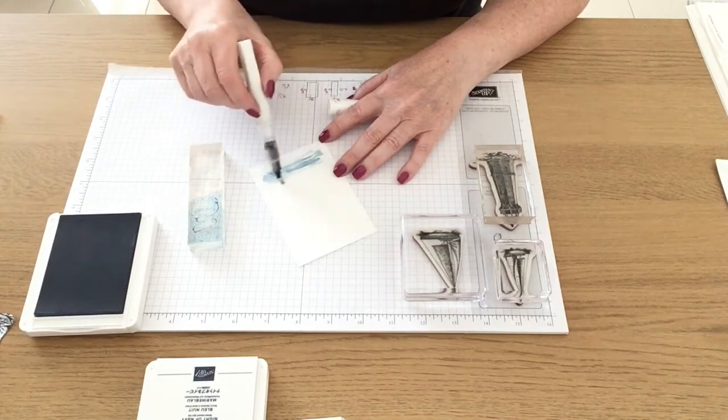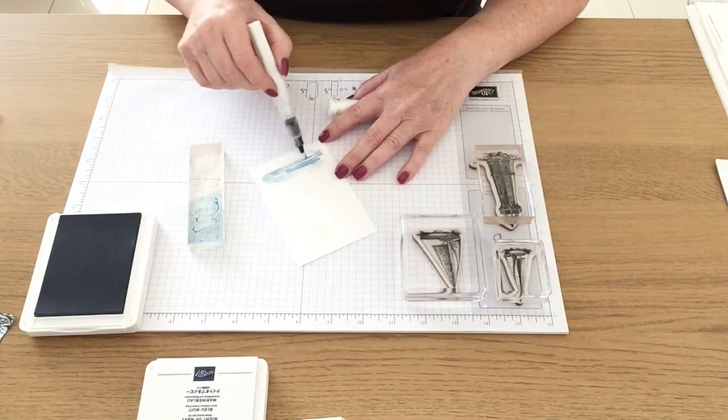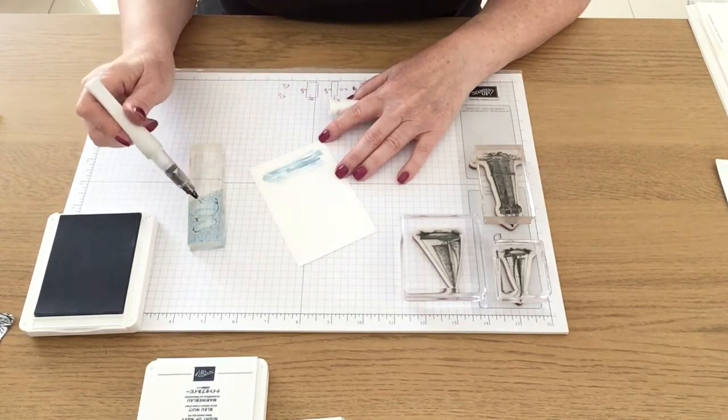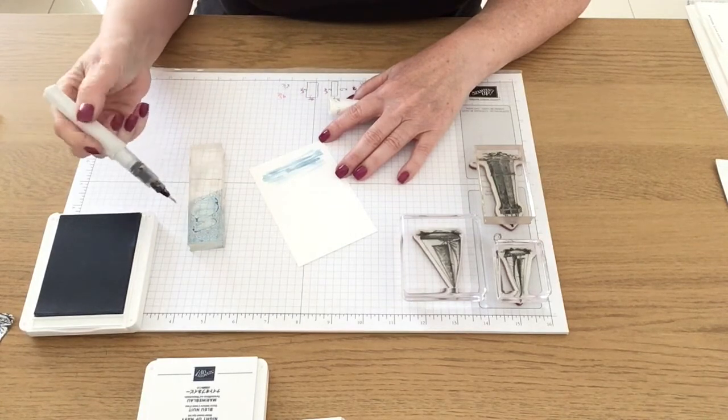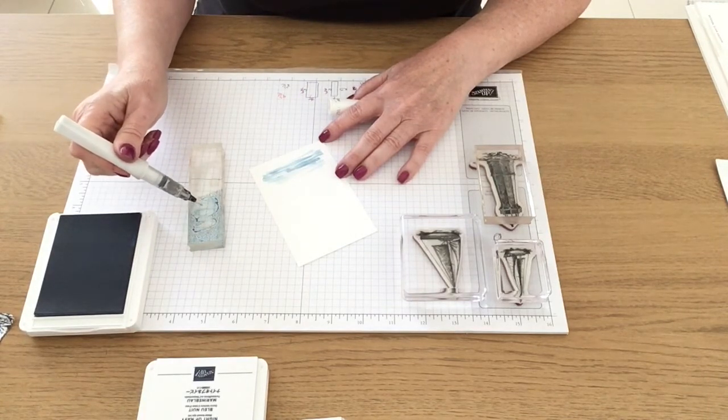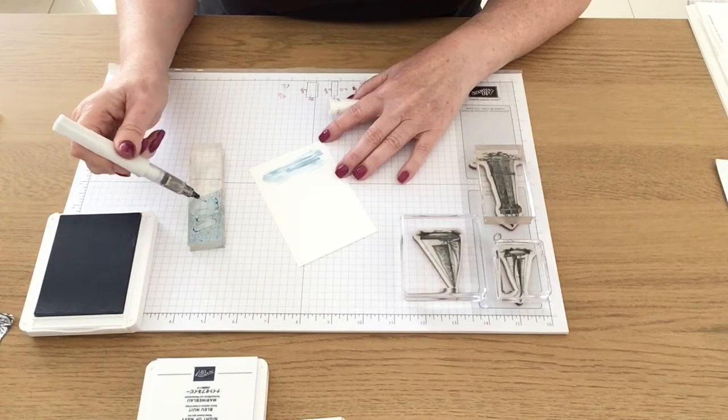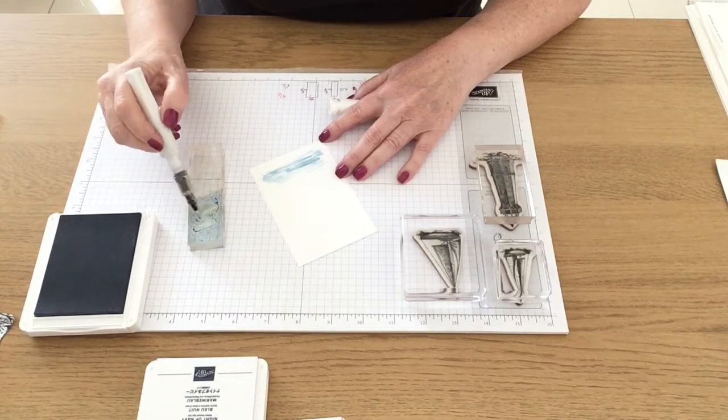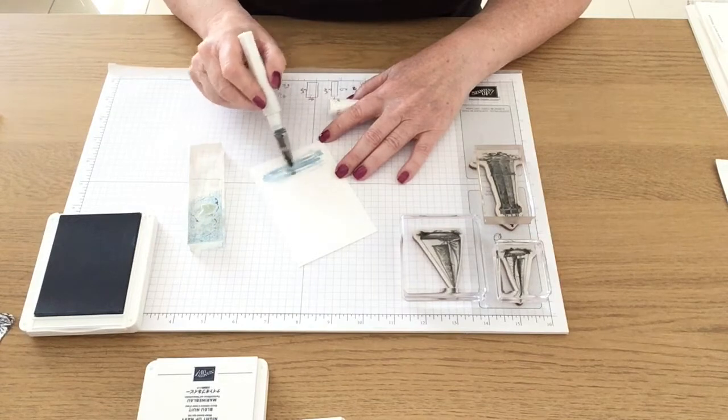It doesn't have to be perfect, I've not done this before, I'm just taking you along through my design process if you like, so I'm just squeezing a bit more of the Wink of Stella into the ink to make it a little bit more wet and painting it on.